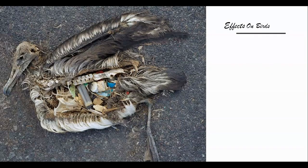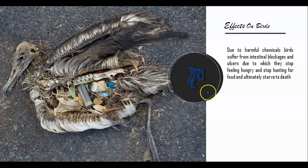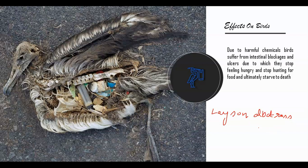Marine debris injures or kills countless seabirds every year. One of the most affected species is the Laysan albatross. Studies have estimated that up to 98% of Laysan albatrosses have swallowed plastic debris, which can obstruct their digestive system. Plastic pollution also adversely impacts pelicans and gulls.